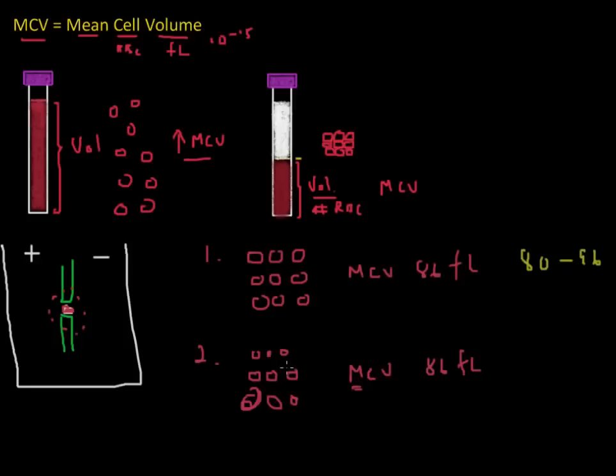So how can we estimate this from the automated counter? Well, there is a parameter called the red cell distribution width, RDW, and that basically tells us to what extent do the individual cells in the sample differ. So the RDW in this patient's case would be increased, and in this one above it would be normal. There is no such thing as a decreased RDW, it's either normal or increased.